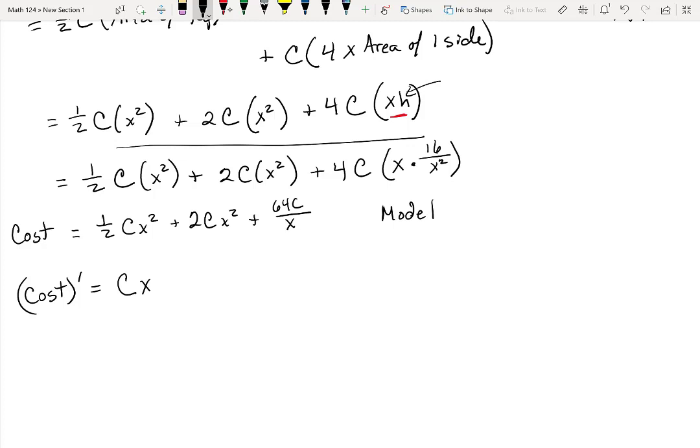So the derivative of cost should just be c times x. I'm thinking of this c as just some number. So this is C times x plus 4C times x. And then this is 64C x to the minus 1, that's negative 1 times 64C x to the minus 2 power. And that would be negative 64C over x squared.